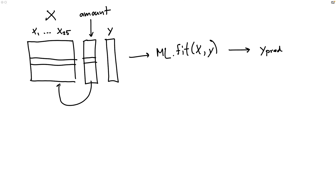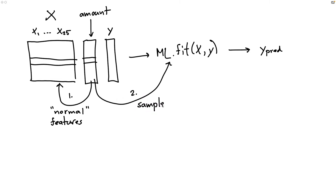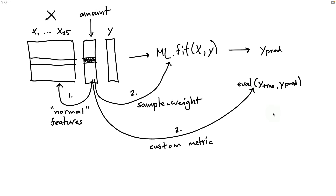One somewhat obvious way to use it is to just add that as part of your normal features. Another thing you might be interested in is maybe adapting the fit procedure, and in particular I'm thinking about using a different sample weight. The thinking here is that if you have a transaction amount that is very high, then maybe it should weigh more when we are fitting a model. But there's also another use case: when we evaluate our machine learning model, maybe we have some sort of a custom metric. You can definitely imagine a business case where the amount of the transaction really matters — if it's a very high amount and it turns out to be fraudulent, that is more important to detect.